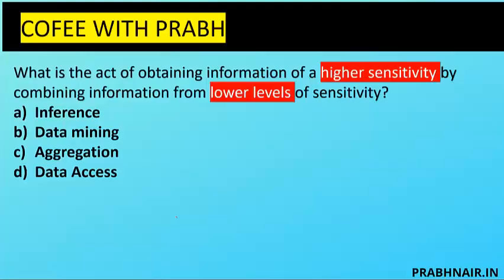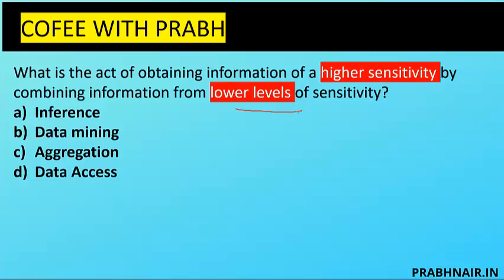The first coffee dose: what is the act of obtaining information of a higher sensitivity by combining information from a lower level of sensitivity? In this question they are talking about obtaining information of a higher sensitivity, but how they obtain it is by combining lower-level sensitivity information. There is no thought process analysis involved — whatever the lower-level information is there, they just collect it and try to find the higher sensitivity data.